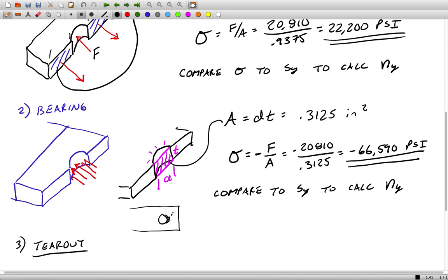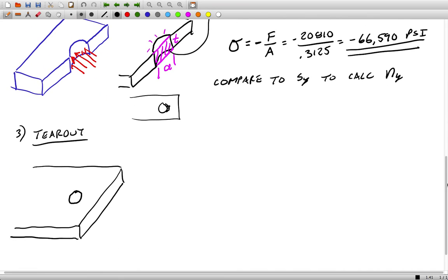The hole would kind of become elongated, more oval shapes, as bearing starts to occur and it compresses that material. But it can deform the hole quite a bit before there's any actual failure. Tear out is sort of the failure that results from too much bearing stress.